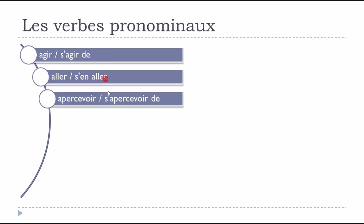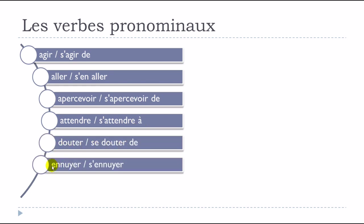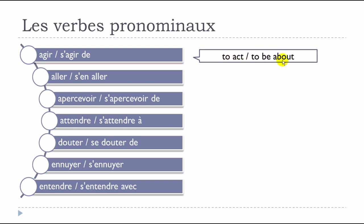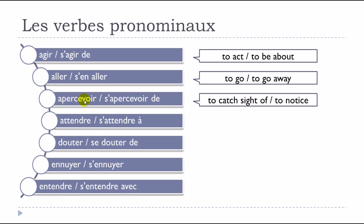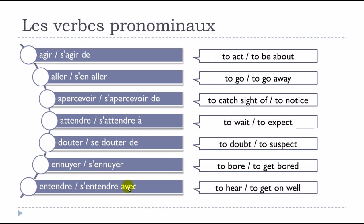Here is a list of verbs that exist in both forms: agir / s'agir de, aller / s'en aller, apercevoir / s'apercevoir de, attendre / s'attendre à, douter / se douter de, ennuyer / s'ennuyer, entendre / s'entendre avec. Agir means 'to act' and s'agir de means 'to be about.'